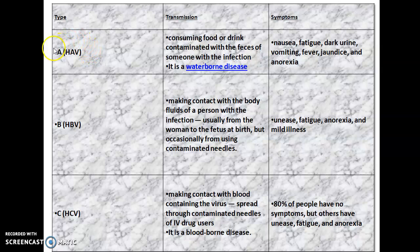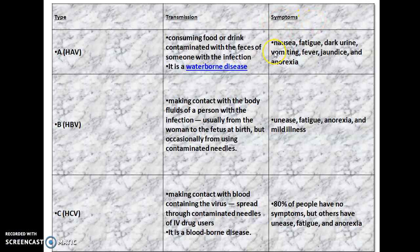Firstly, we talk about Hepatitis A. How it is transmitted: by consuming food or drink contaminated with the feces of someone with the infection. It is a waterborne disease, commonly called infectious hepatitis. It is contracted through contaminated water, food, and sewage, and also transmitted by the fecal-oral route. Symptoms include nausea, fatigue, dark urine, vomiting, fever, jaundice, and anorexia.